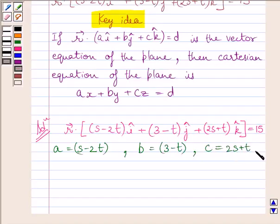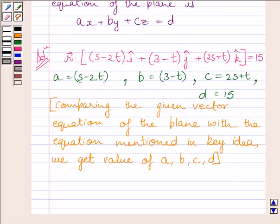Also, D is equal to 15. Now substituting these values of A, B, C and D in this equation, we get Cartesian equation of the given plane.